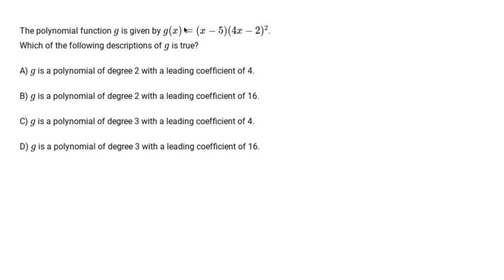The polynomial function g is given by g(x) equals (x - 2) times the quantity (4x - 2) squared. Which of the following descriptions of g is true?